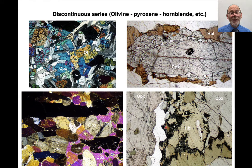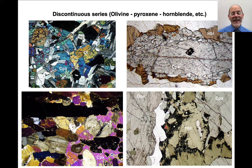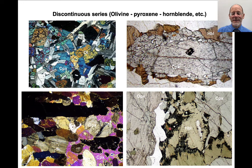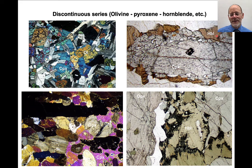One important thing: you do not see the complete Bowen's Reaction Series in any single rock. You can capture certain parts of it — olivine to clinopyroxene, orthopyroxene to clinopyroxene, clinopyroxene to biotite, clinopyroxene to hornblende — but you don't get the whole thing. You get different stages captured in different rocks.